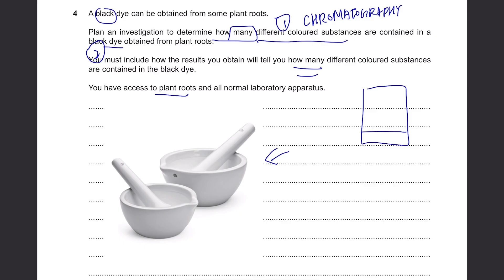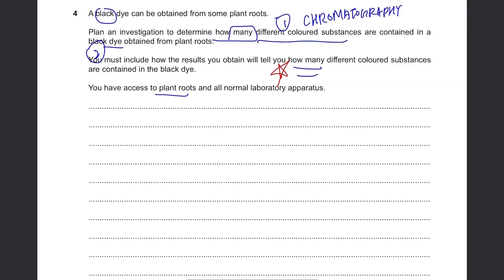So the bottom of the paper, draw a line, a base line, you put the black dye, and you place this chromatography paper in a container with a solvent. You can just write water, then the substances will start traveling upwards, making dots on the way. And to answer the last question, the most important on how you're gonna use the results to tell how many different substances are in this dye, you count the number of spots on the chromatography paper. It's not really hard when you know the answer, but you can easily leave out the part about crushing the root using this pestle and stuff. So it's important to try out as many past papers as possible.